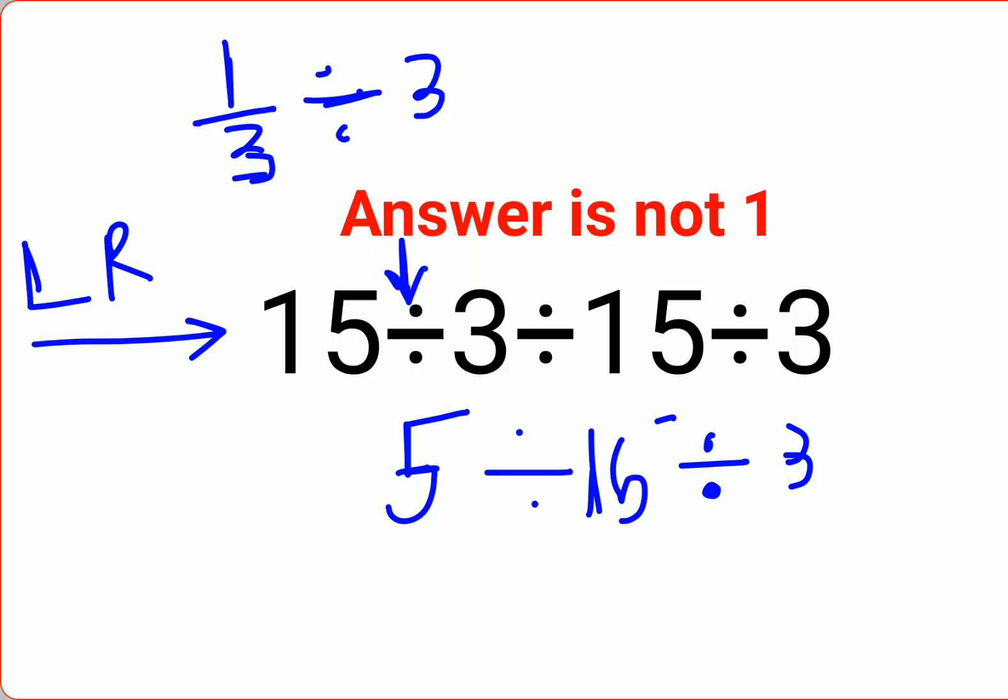Now when you have division with a fraction, you need to follow the rules of KCF. Where K stands for keeping the first number as it is. C stands for changing the division sign to multiplication. And F stands for flipping. Or reciprocal of 3 is 1 upon 3.